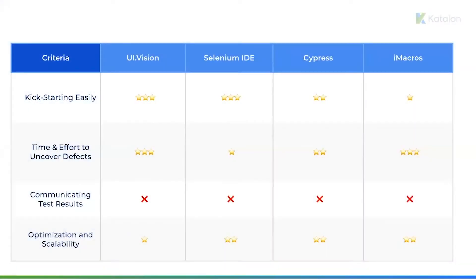We have four testing tools: UiVision, Selenium IDE, Cypress, and iMacros. If you want to kick start test automation, UiVision and Selenium IDE provide a fast and lightweight option for users compared with other tools. You also don't need programming experience to start using these two tools, whereas Cypress requires some programming knowledge and iMacros limits you to only 50 actions if you're only using their free version.